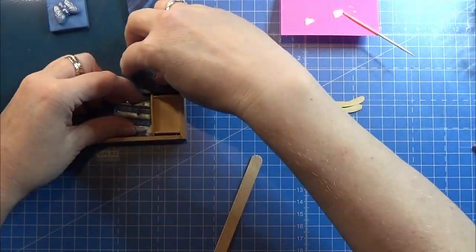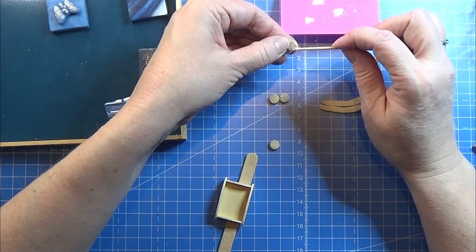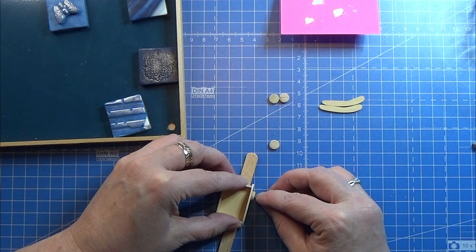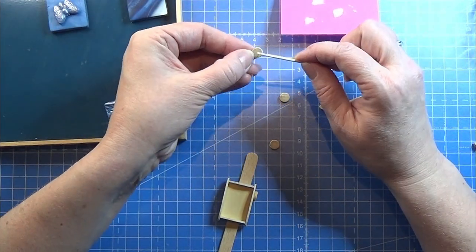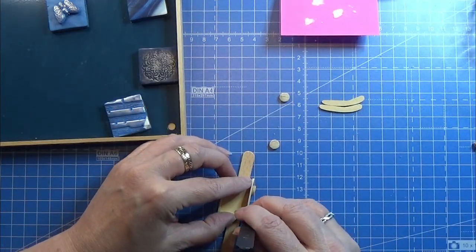Now I am going to glue on the wheels on the wagon. I'm using a popsicle stick for keeping the wagon a little above the ground while gluing on the wheels here.